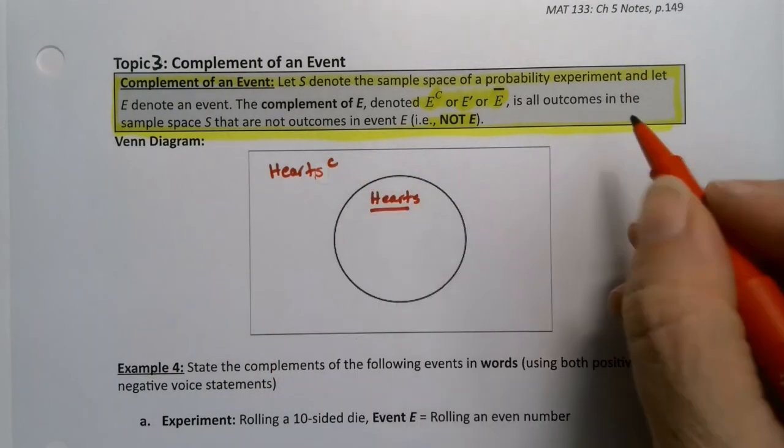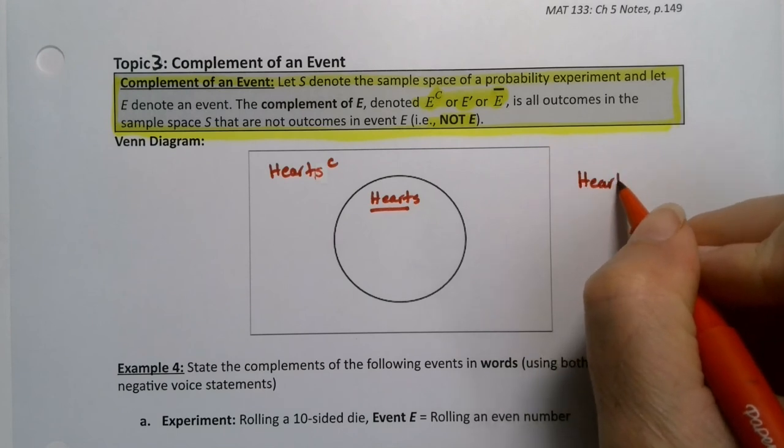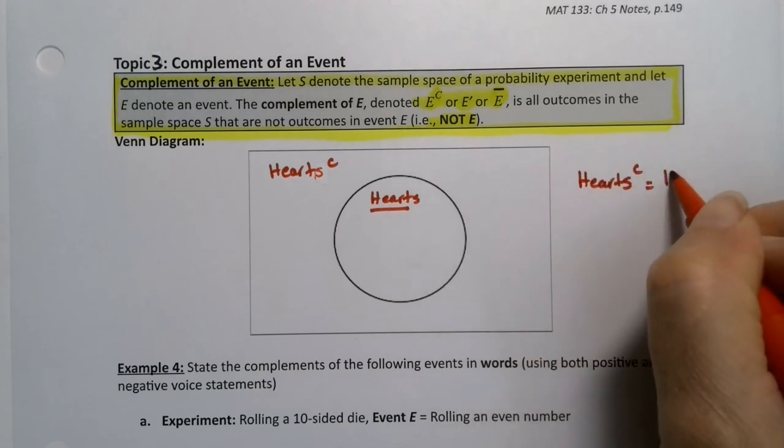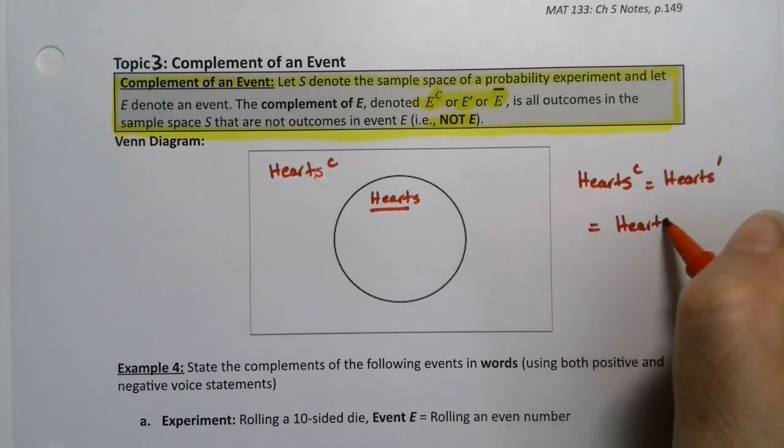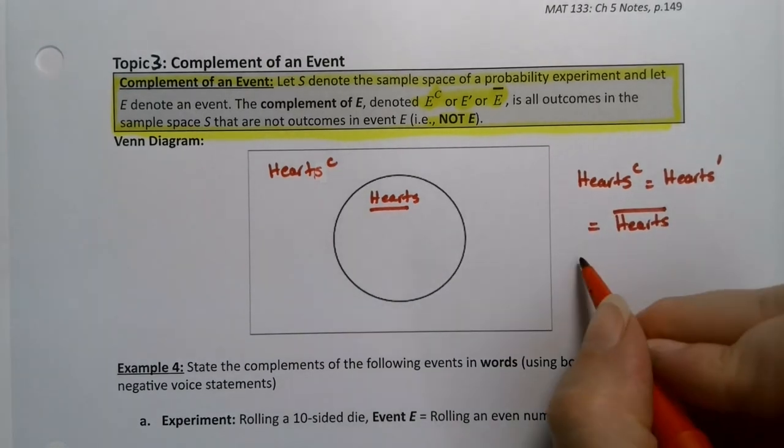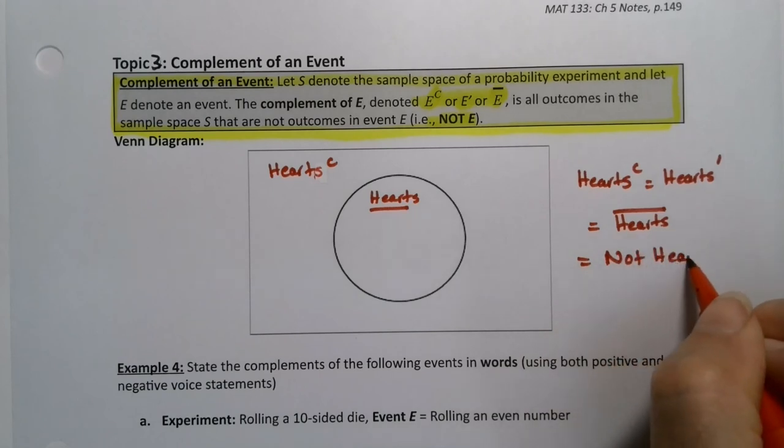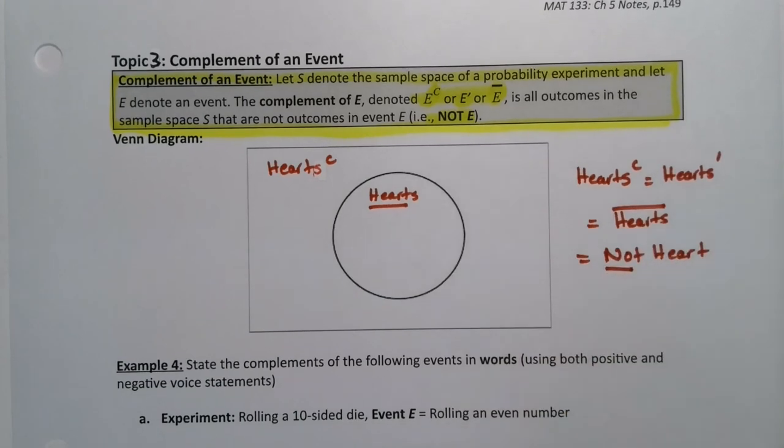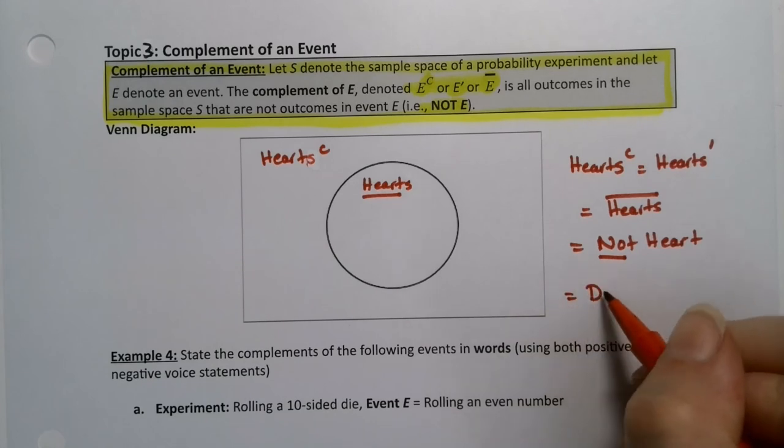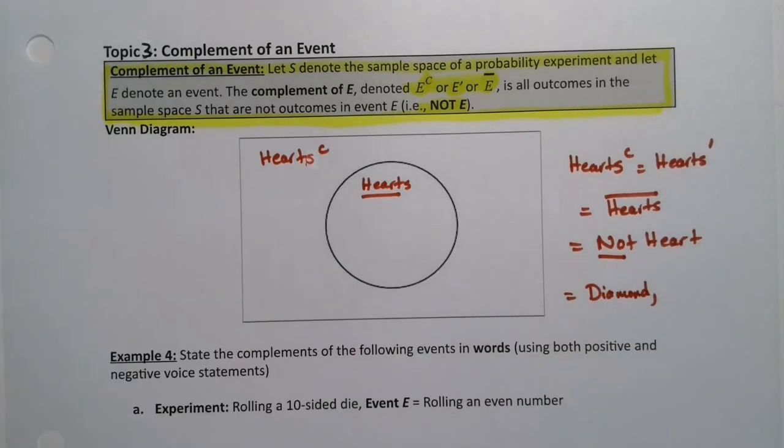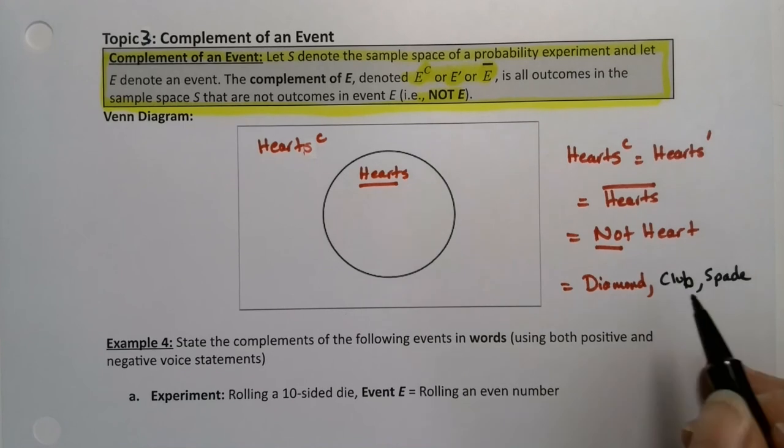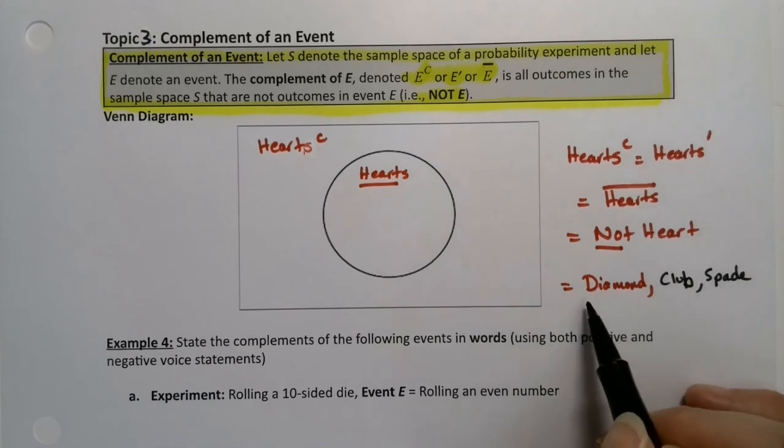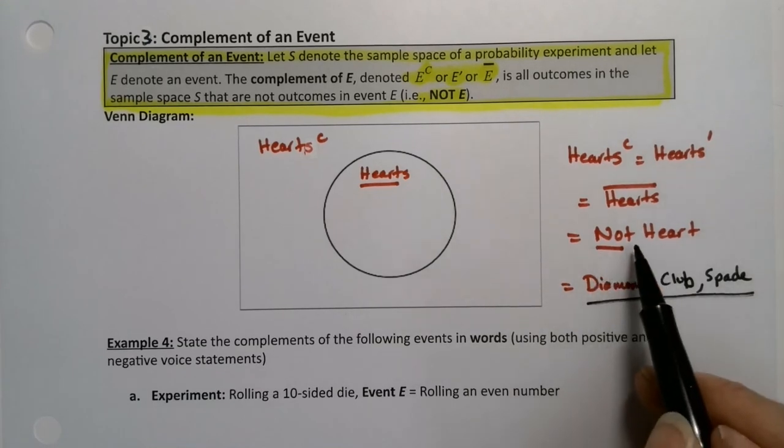So what would that mean? Hearts complement would be, or you could say hearts prime, same thing, which was the same thing as hearts with a little bar over it. They all mean the same thing. They all mean not a heart. Well, if you're not a heart, what are you? That means you're a diamond. I'll even color code this, a club or a spade. Right? There you go. So these three right here and this right here mean the same thing.